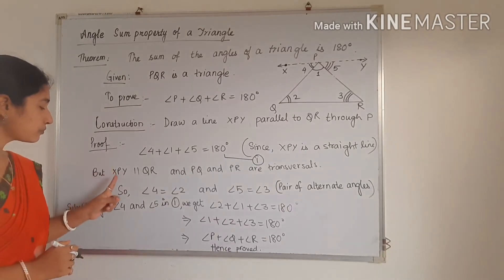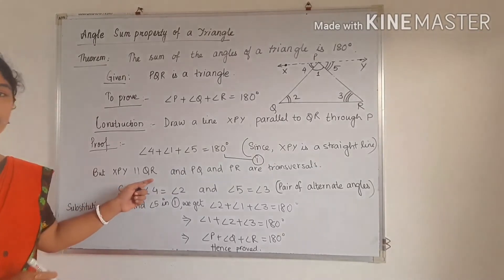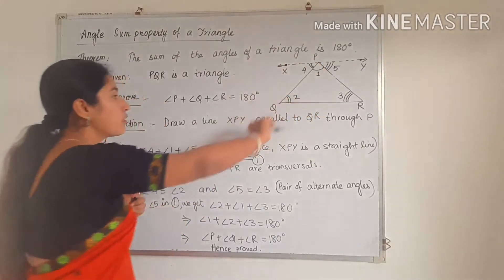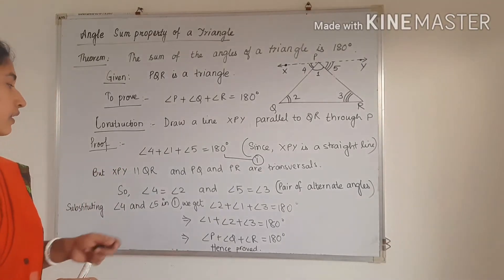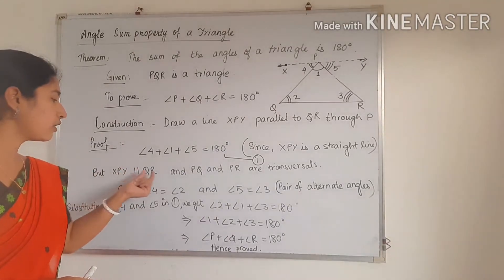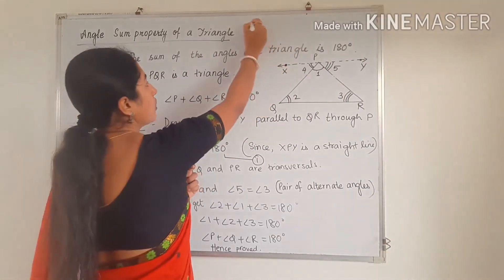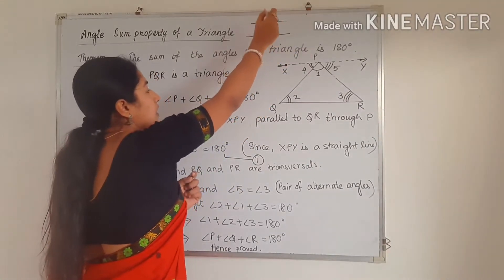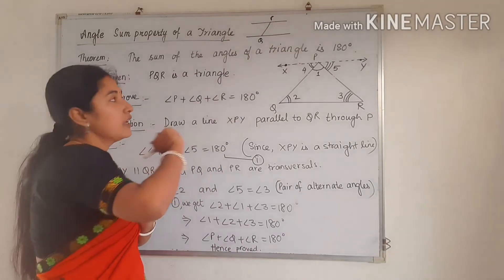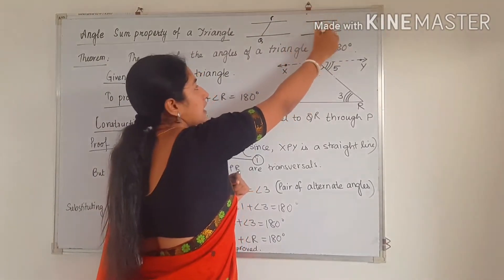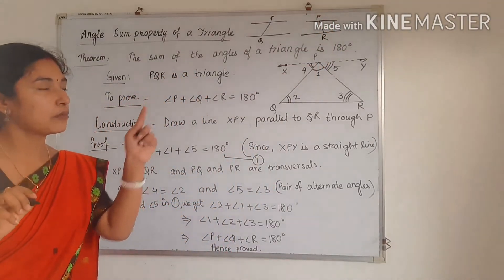But the straight line XPY is parallel to QR. So if it is parallel to QR, then there will be alternate angles which are equal. Now we have to identify the alternate angles. XPY is parallel to QR, and PQ and PR are transversals. PQ is one transversal and PR is also a transversal. These are the two transversals for the parallel lines XPY and QR.